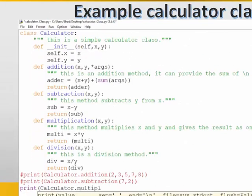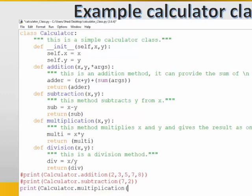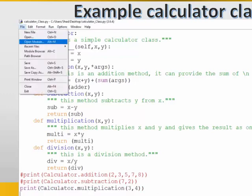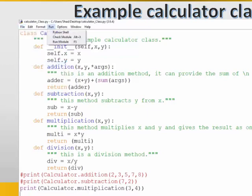Now we run the multiplication method of the same class. We pass two values three and four and we should get 12 as an output.